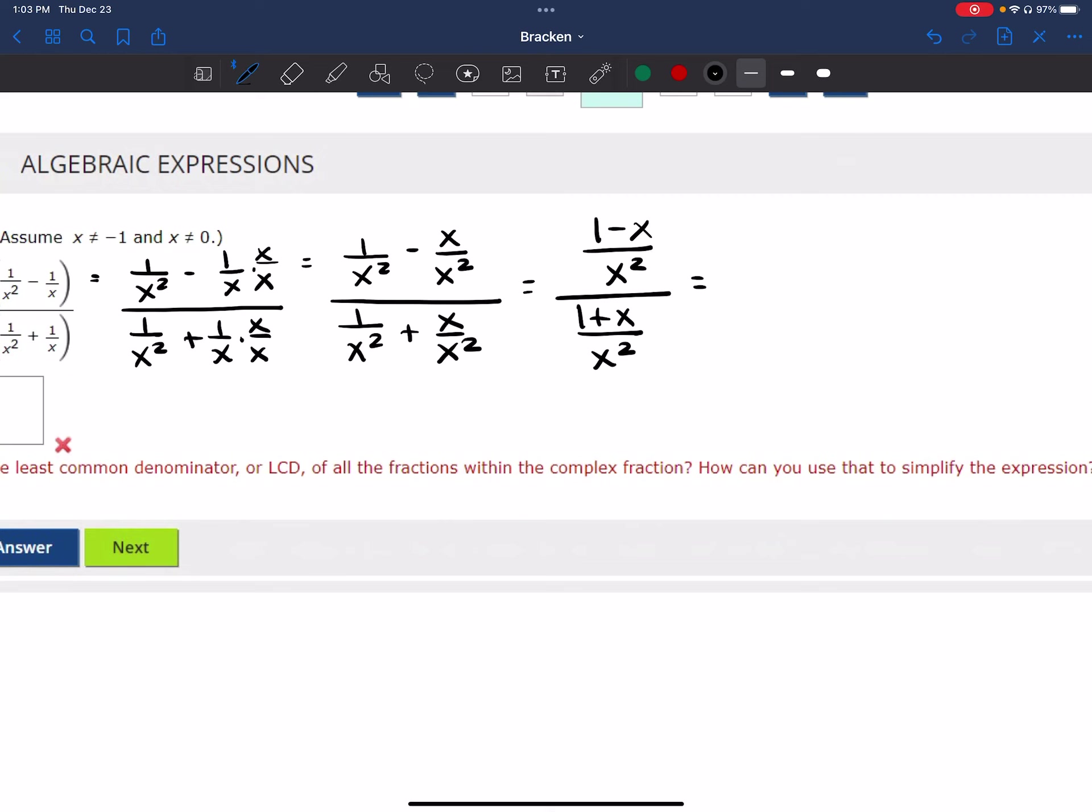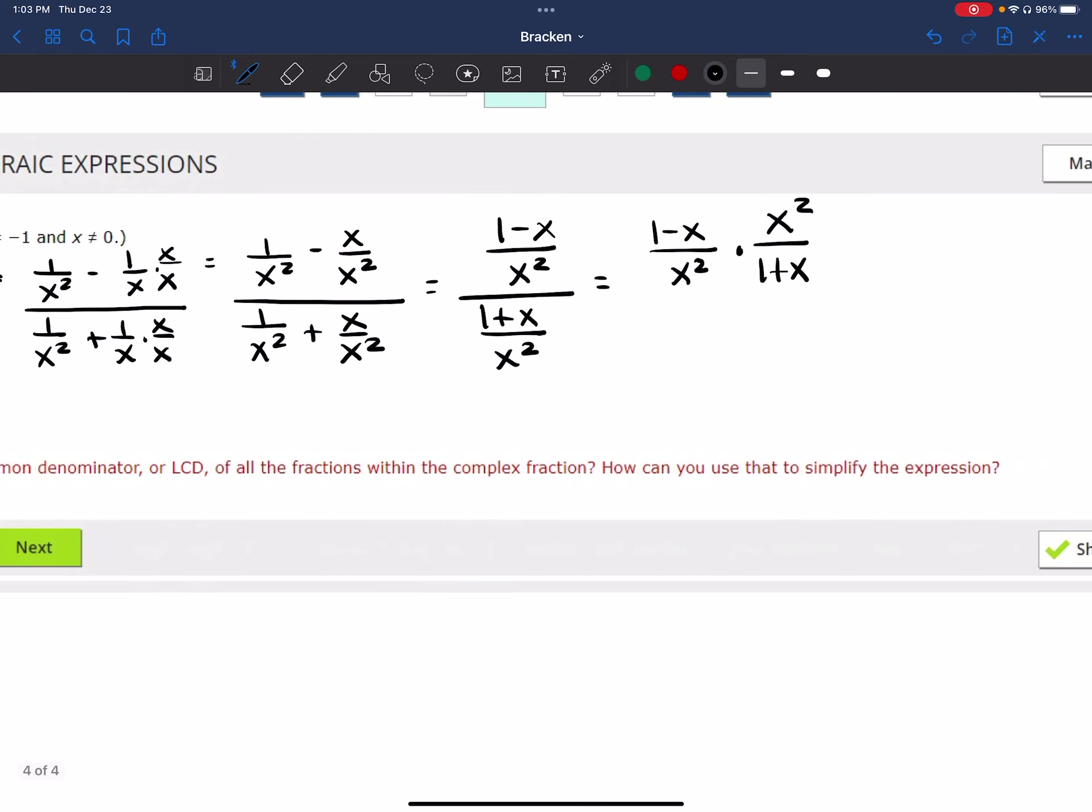This is really, remember when we divide fractions, we keep. So I'm going to keep that top fraction. We change the divide to multiply and then I flip X squared over 1 plus X. Okay, now this is really nice. I know those X squareds are going to cancel. I'm going to show you why they cancel.